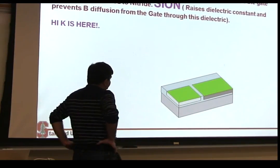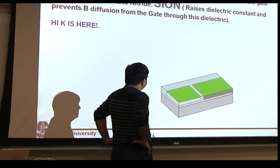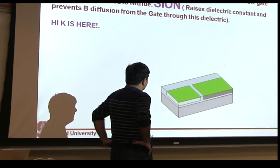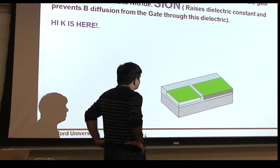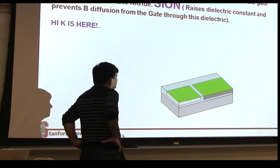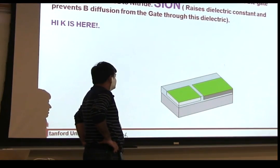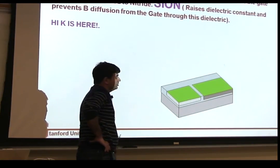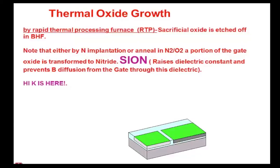So the next step is your gate oxide growth. This is typically your most critical oxide, so utmost care is taken while you're growing this. So it's typically a thermally grown oxide, not a deposited oxide. It's done in an RTP chamber where you can grow it in an oxygen plasma or oxygen environment.